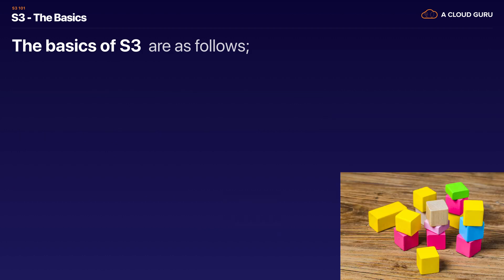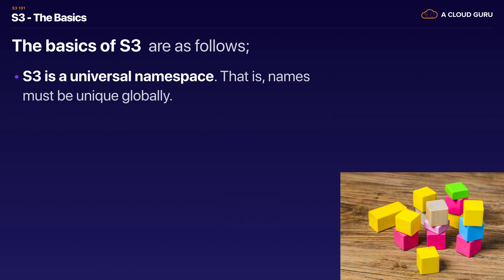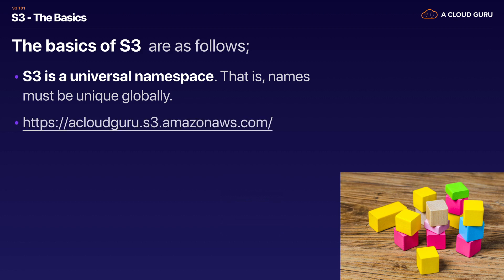S3 is a universal namespace, which means the names must be unique globally. When I create a bucket, I can't just use 'test bucket' because someone's already taken that. I can't use 'acloudguru' because I took that a long time ago. When you create a bucket, the name has to be unique because it's actually creating a web address — for example, acloudguru.s3.amazonaws.com.